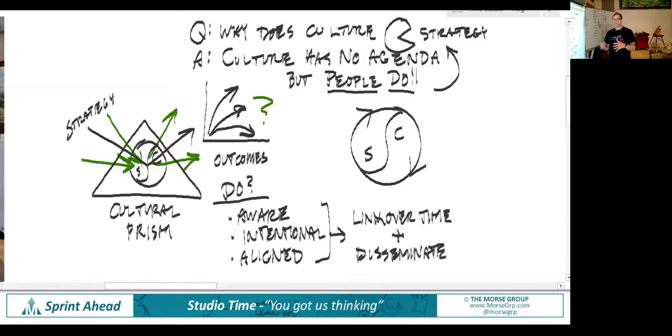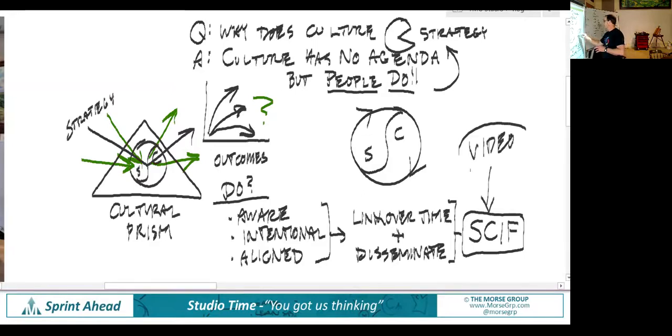Leaders asked us to put together a framework, a model around this that helps us do this. We have come up with what we call the SCIF, the Strategic Culture Interplay Framework. If you go to our YouTube channel, on our methods, or to our website, there's a short video that describes this and how it operates. We encourage you to do that.